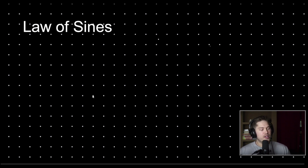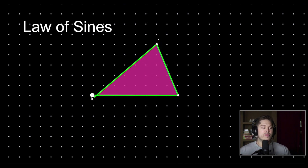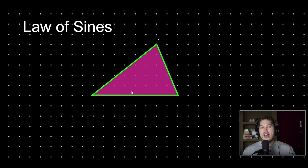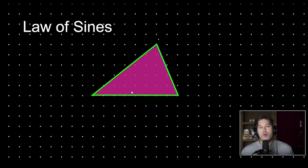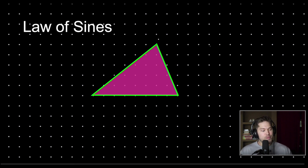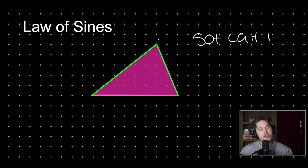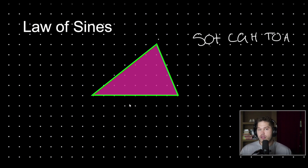The law of sines, just like the law of cosines, is a strategy that you can use in order to solve the different components of your triangle, whether it be an acute triangle, an obtuse triangle, or a right triangle. Whenever you first started learning trigonometry, you learned SOHCAHTOA, and SOHCAHTOA is only good for right angle triangles. So we can use the law of cosines and the law of sines to solve the components of any triangle, not just right angled triangles.